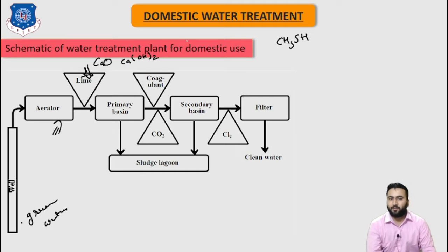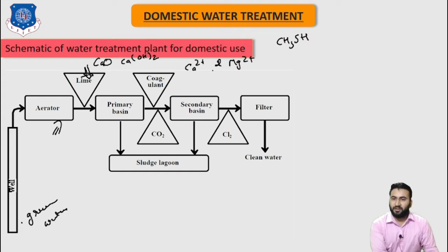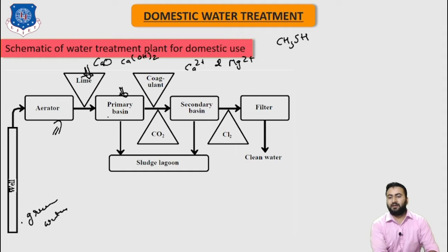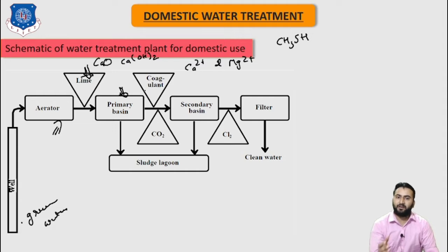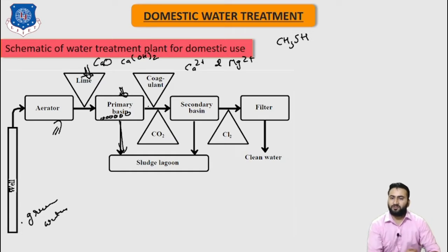After addition of lime, the pH rises and results in formation of precipitate containing the hardness ions Ca²⁺ and Mg²⁺. This precipitate settles from the water in the primary basin. Much of the solid material remains in suspension and requires the addition of coagulants such as iron trisulfate and aluminum sulfate, which form gelatinous metal hydroxides that settle down and collect colloidal particles for sludge.